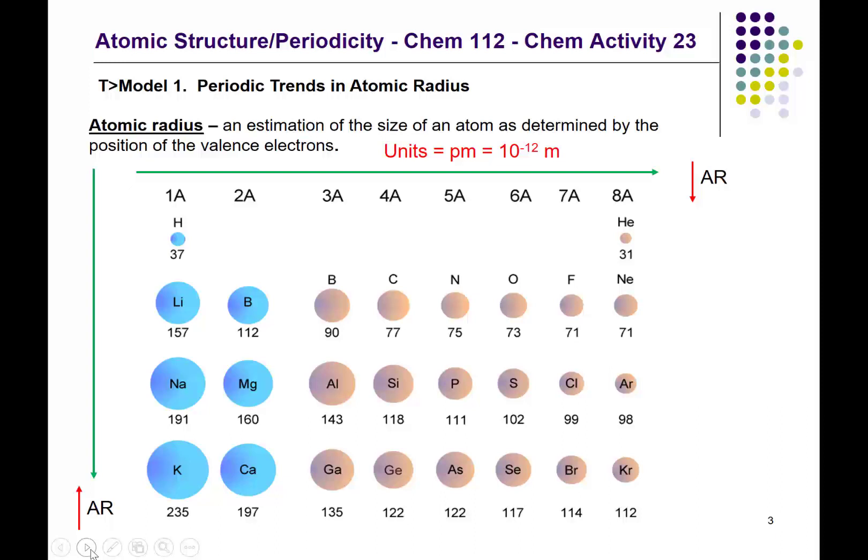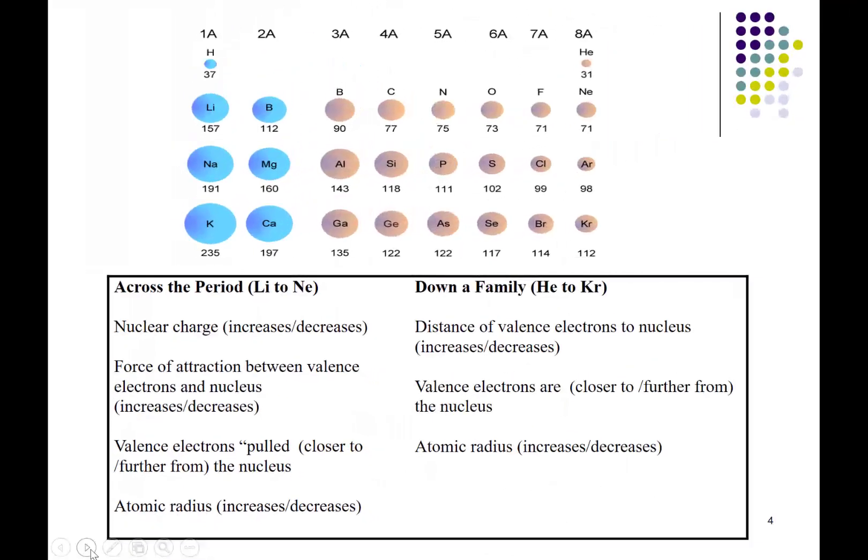One thing we can ask you is to state the trend of a particular property: across the periodic table, atomic radius decreases; down the periodic table, atomic radius increases. Rather than just memorizing the trends, I'd like you to understand why they occur. These trends are related to the electronic structure of the atoms, and in this activity I'm providing a scaffold to help you develop an explanation for assignments, quizzes, or tests.